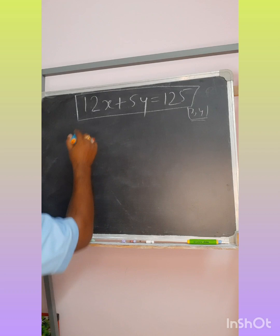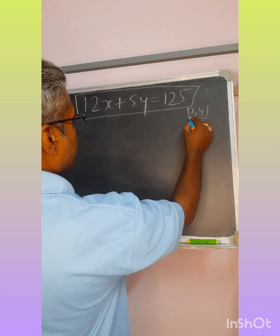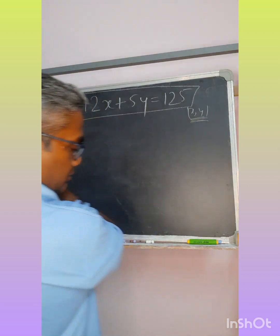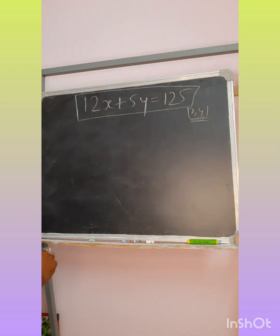This is the expression: 12x + 5y = 125, where x and y are positive integers. That is your task.